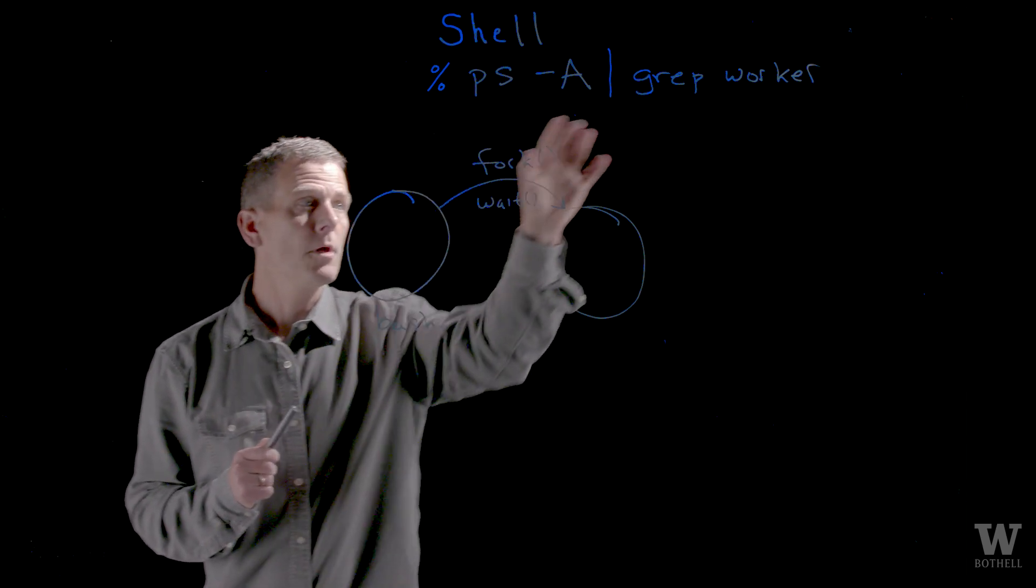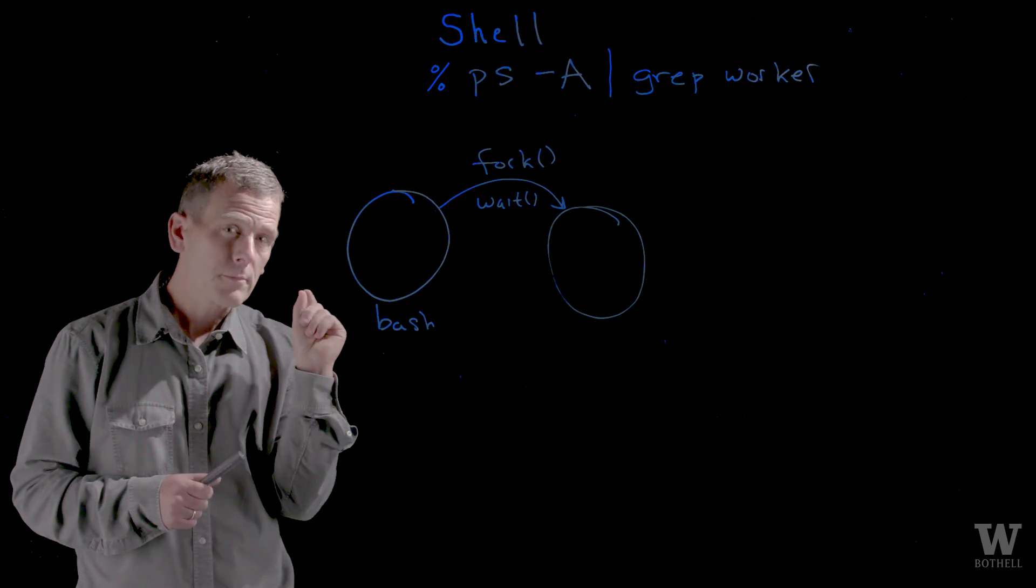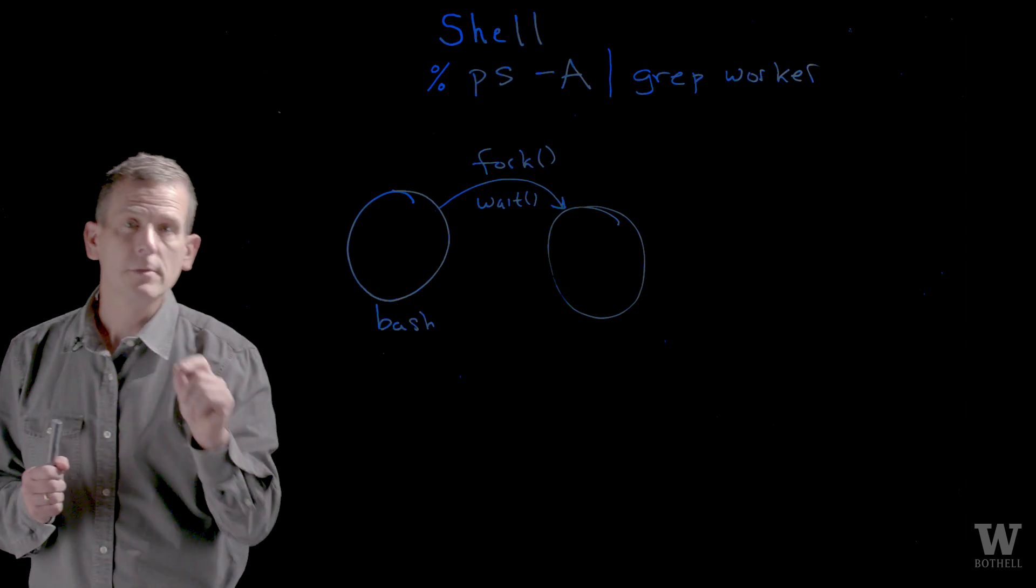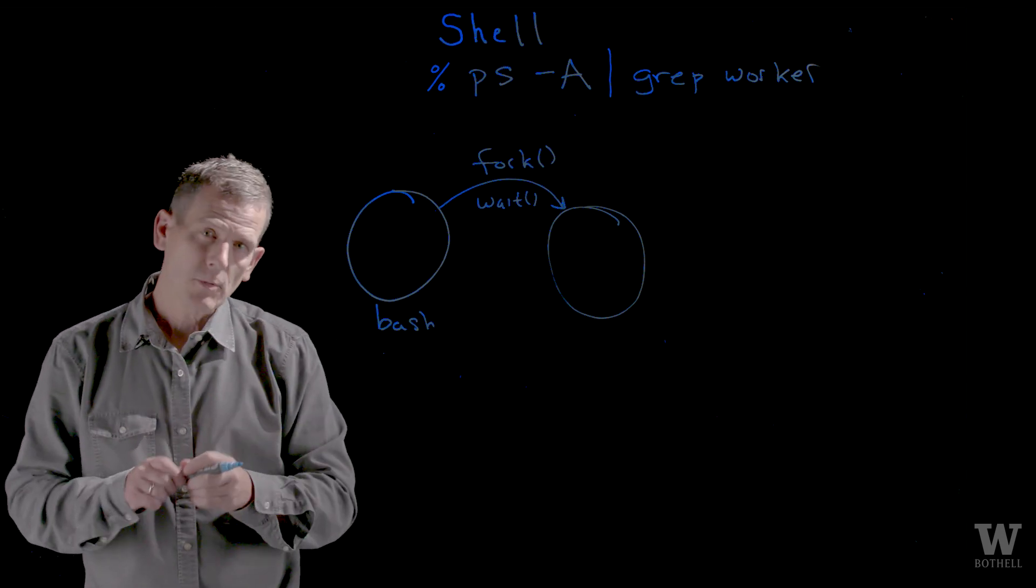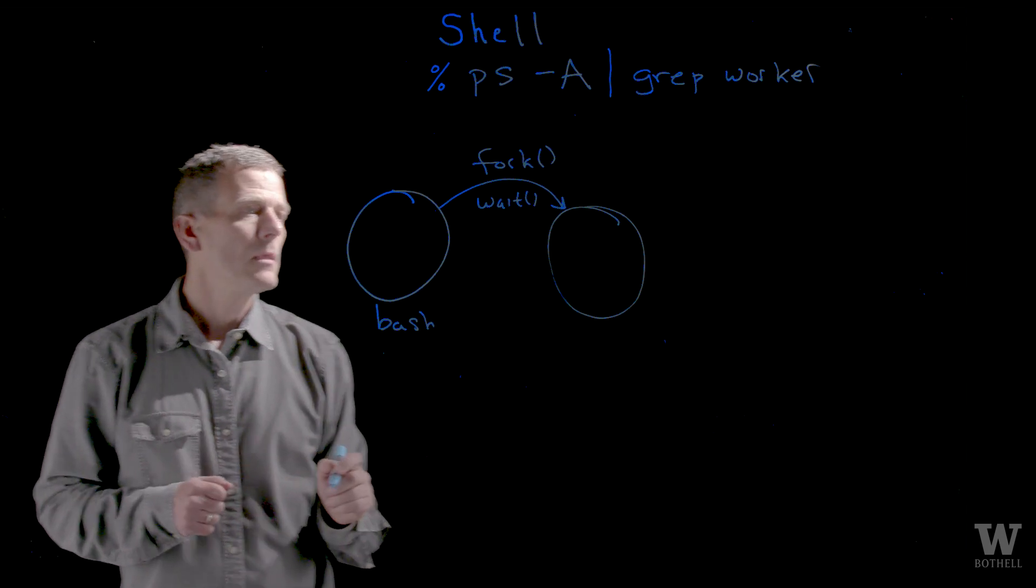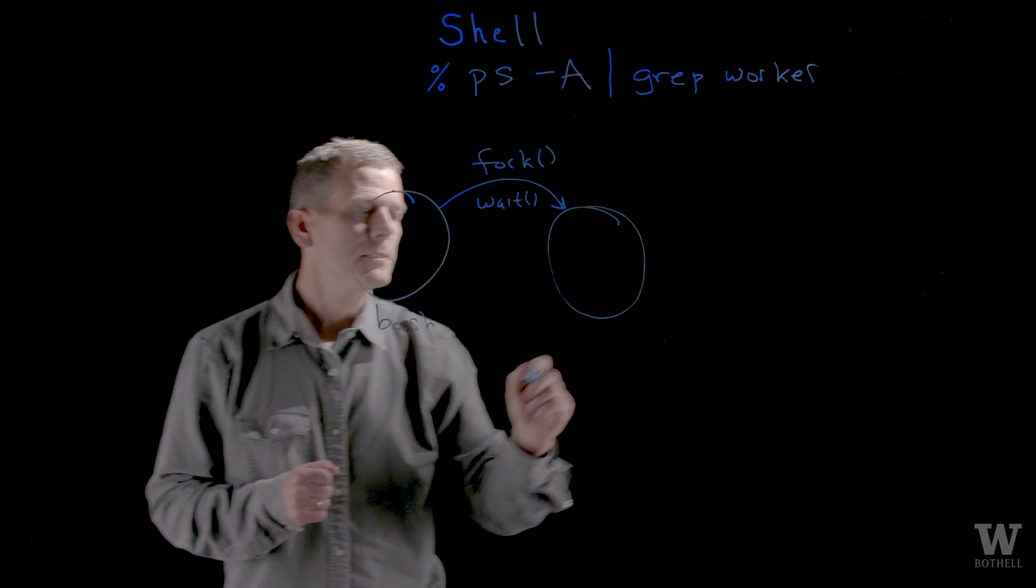One to execute the ps, one to execute the grep, and I need to take the output from the ps and pipe it to the input of the grep. How does this work? There is a system call called pipe and the first thing that this process will do is it will create a pipe.